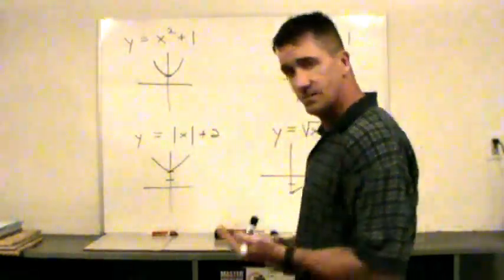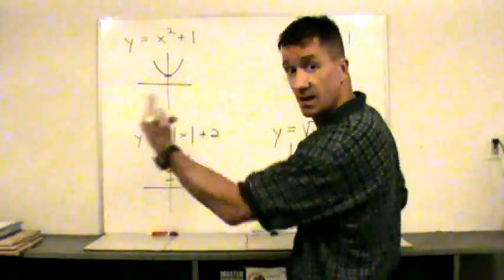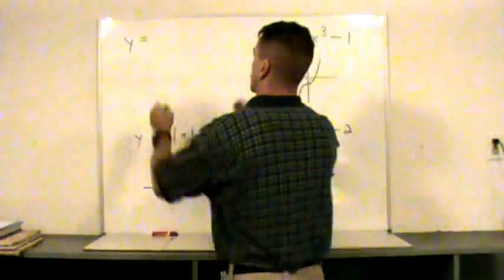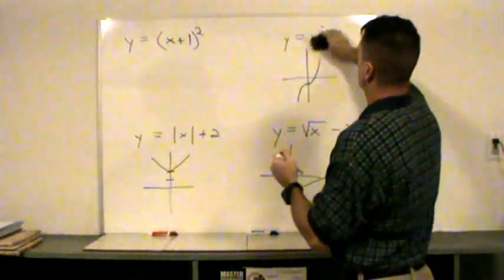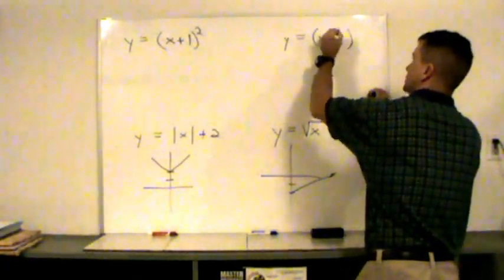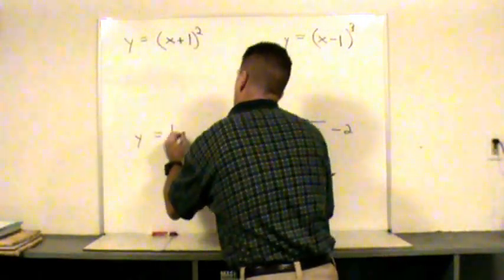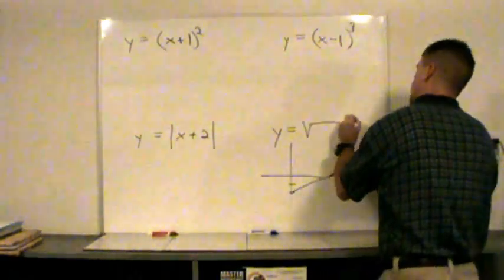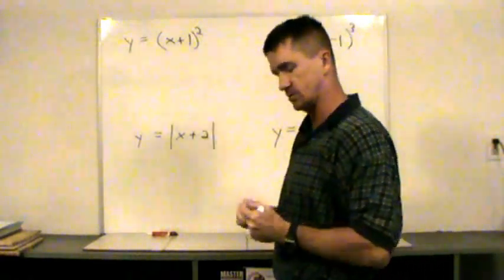That's vertical shifts. Add a value or subtract a value shifts it up and downward. Notice this was outside the bars, outside that radical. Let's talk about horizontal shifts, left and right. So I'm going to go on here. What makes this graph shift left or right? Notice the difference in what I just wrote in comparison to what I had before. See these parentheses?